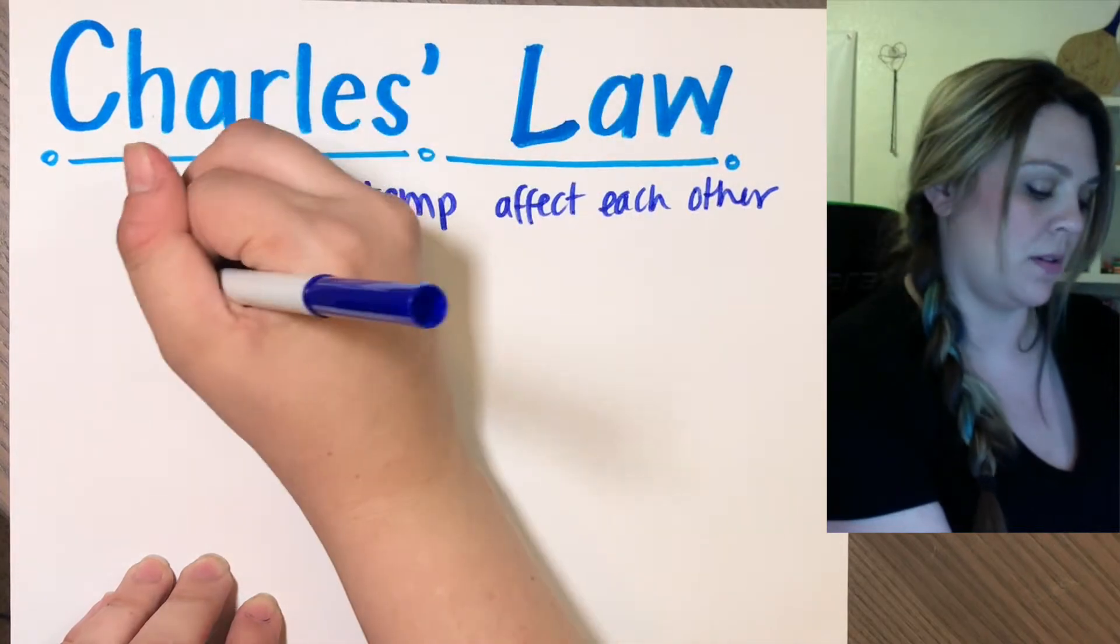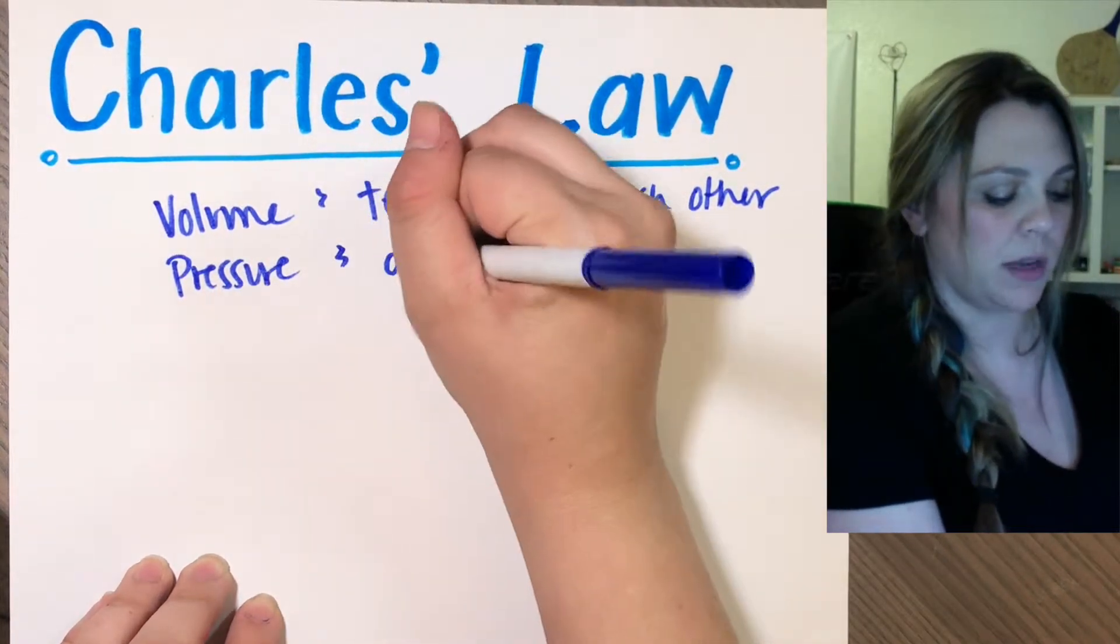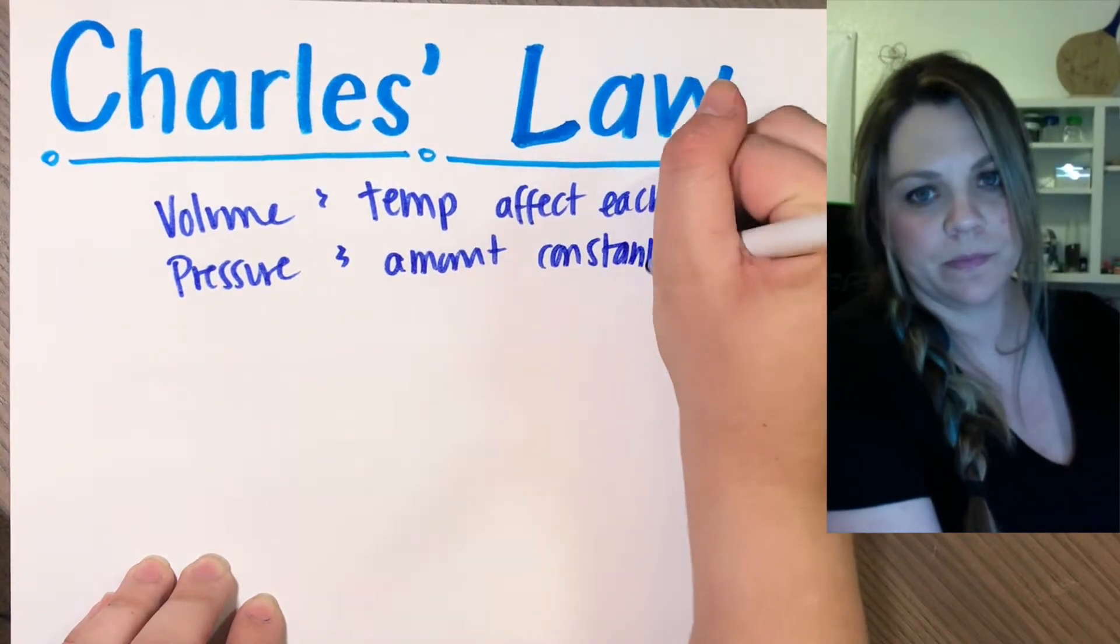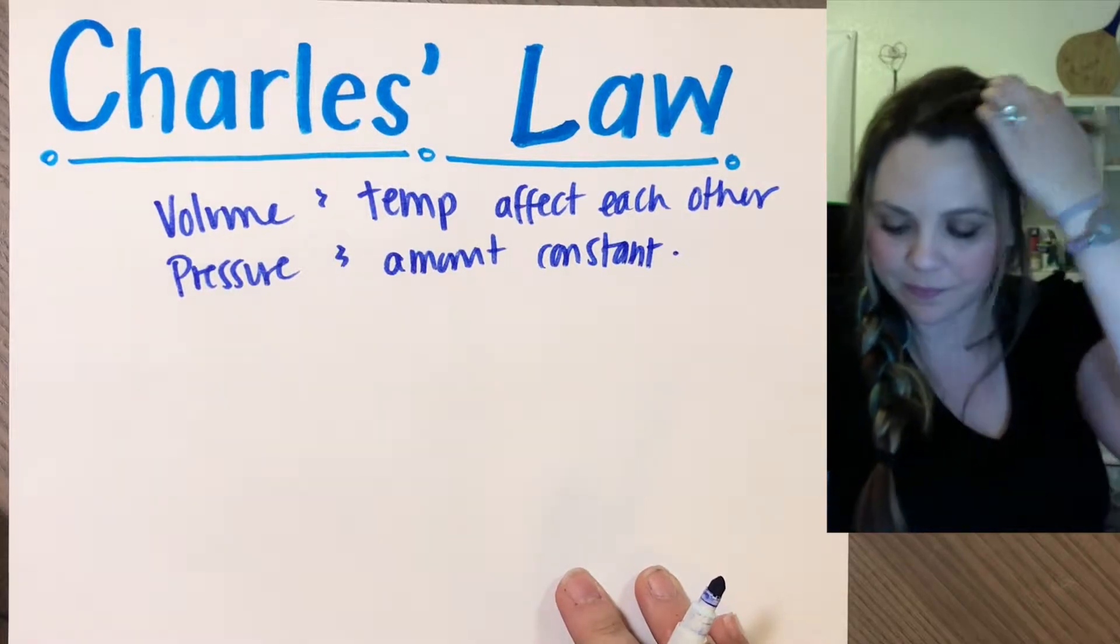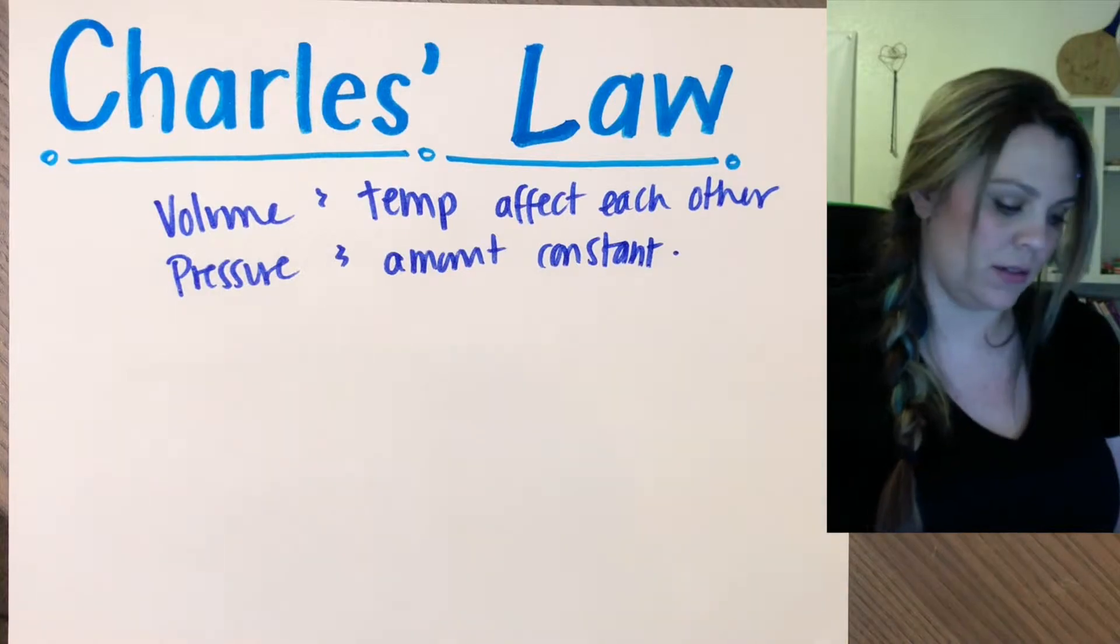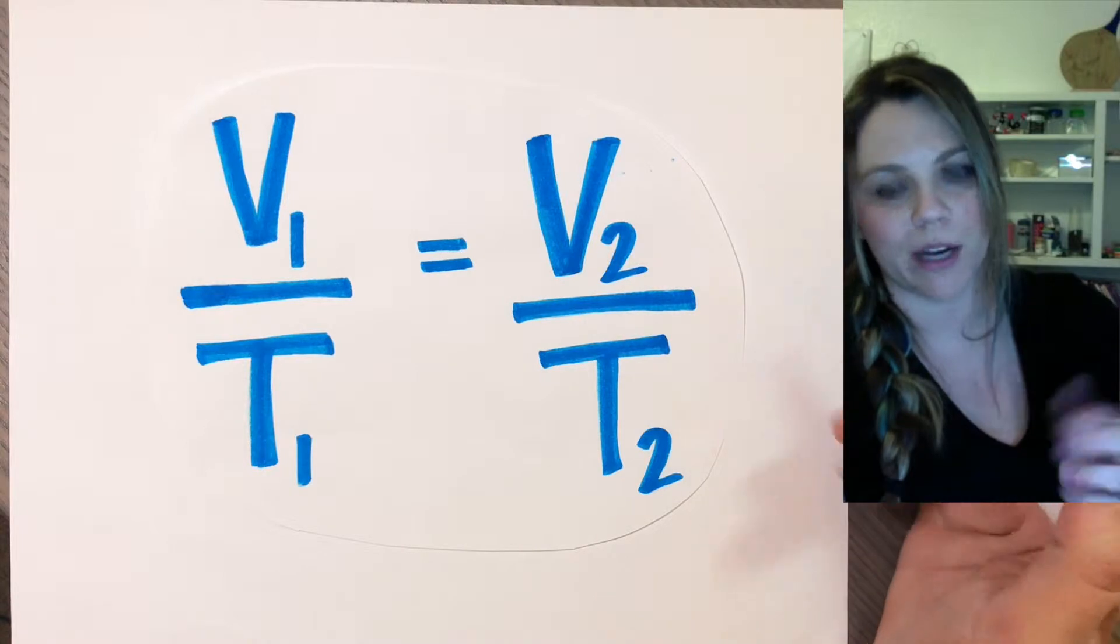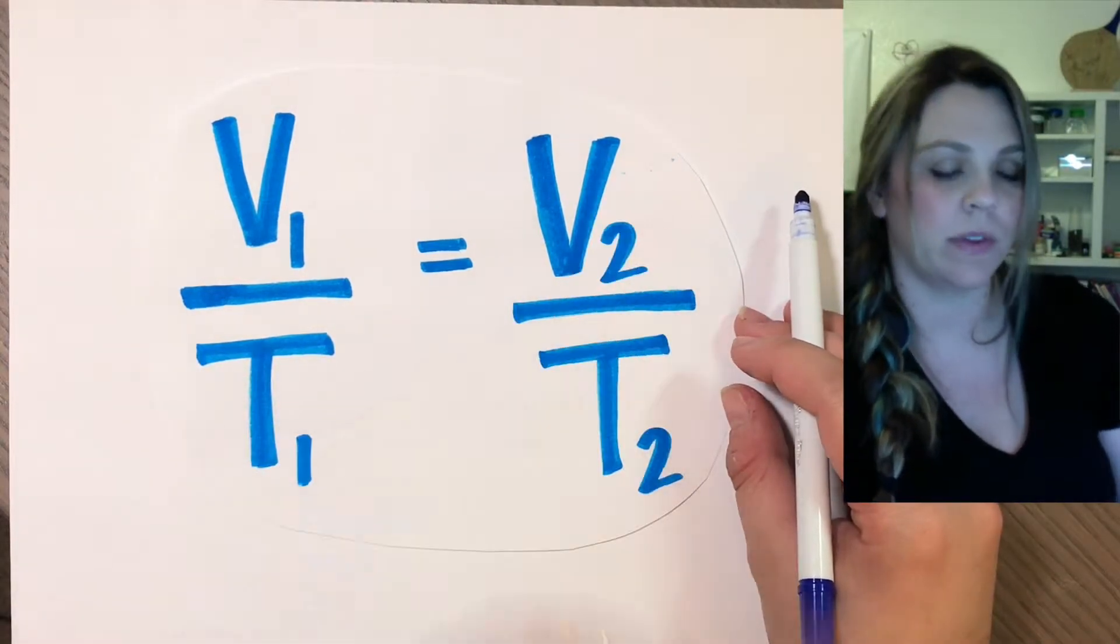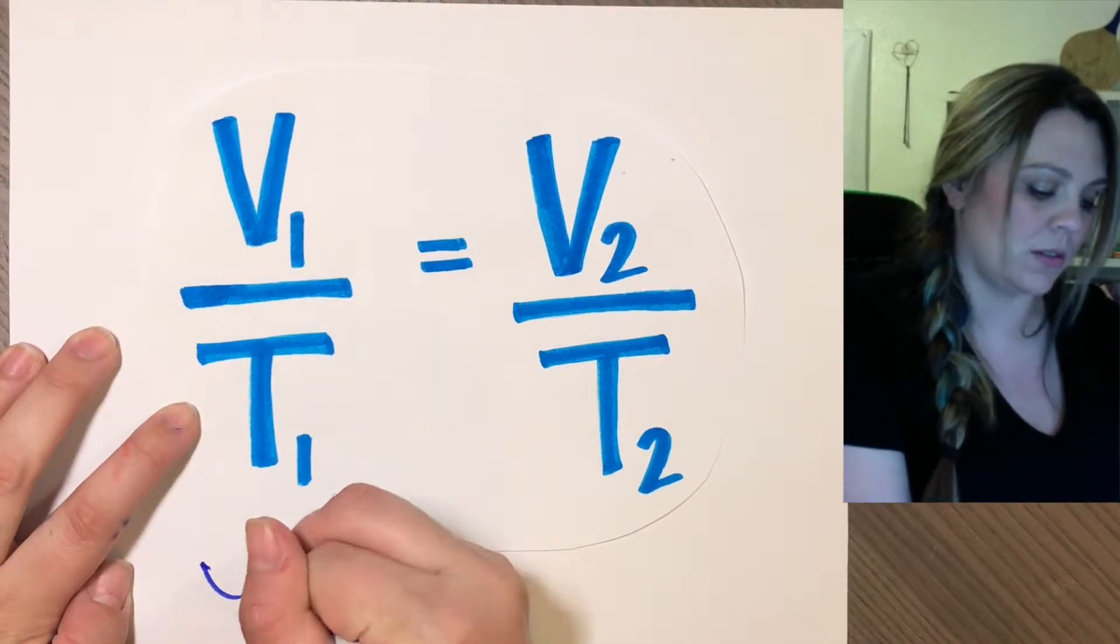We are going to keep pressure and amount constant, so we're only changing volume and temperature. The equation that we get is a fraction: volume one divided by temperature one equals volume two divided by temperature two.